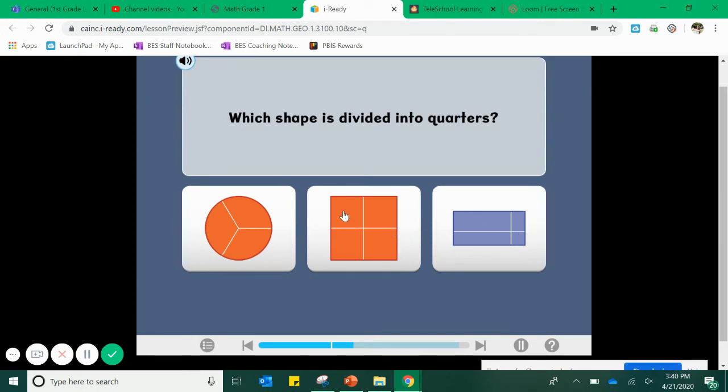The square, however, is divided into one, two, three, four equal parts. Four equal parts are called quarters or fourths. And again, iReady is going, yahoo, you got it.